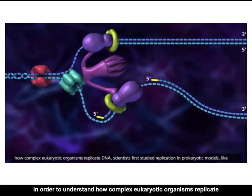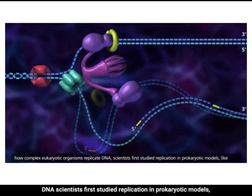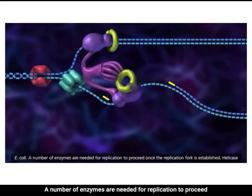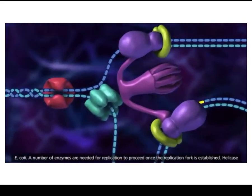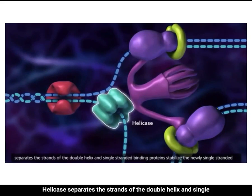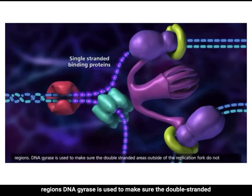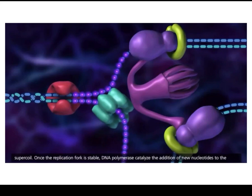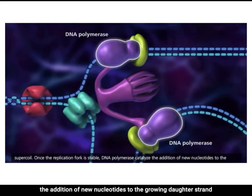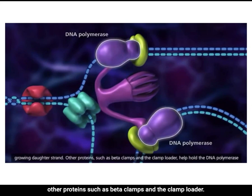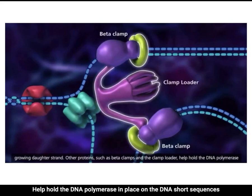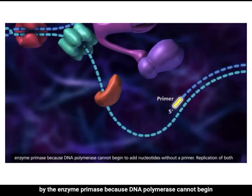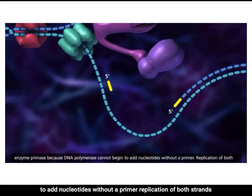In order to understand how complex eukaryotic organisms replicate DNA, scientists first studied replication in prokaryotic models like E. coli. A number of enzymes are needed once the replication fork is established. Helicase separates the strands of the double helix, and single-stranded binding proteins stabilize the newly single-stranded regions. DNA gyrase ensures the double-stranded areas outside the replication fork do not supercoil. Once the replication fork is stable, DNA polymerase catalyzes the addition of new nucleotides to the growing daughter strand. Short sequences of RNA called primers must be paired to the template strands by primase, because DNA polymerase cannot begin without a primer.